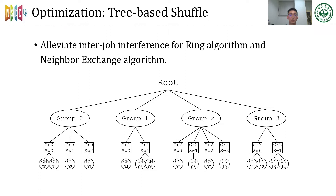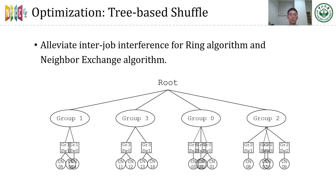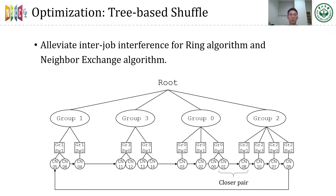The second optimization is tree-based shuffle, which can be used to alleviate inter-job interference for the ring algorithm and neighbor-exchange algorithm. It is an extra step to reorder the nodes before the communication operation. The compute nodes' switches and groups of the current job are organized into a tree according to their hierarchical position in the network. The root node shuffles its children nodes to change each group's neighboring groups. Then each group shuffles its children nodes to change each switch's neighboring switches. Each group also tries to find two switches closer to its two neighboring groups and moves them to the head and tail respectively, decreasing latency of inter-group communication and reducing the use of local links. Finally, traversing the shuffled tree gets new ranks for each process, decreasing contention for the link connecting neighboring groups.